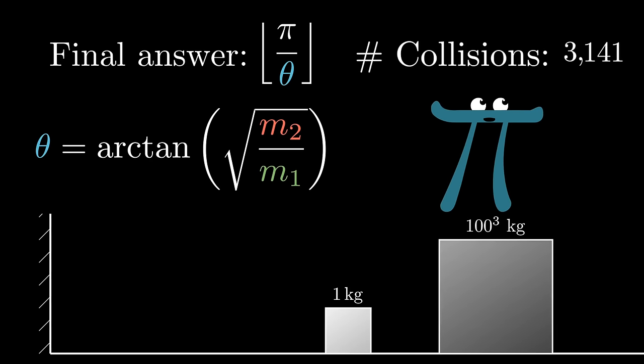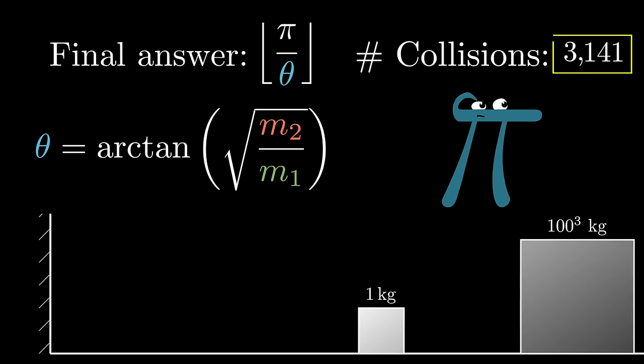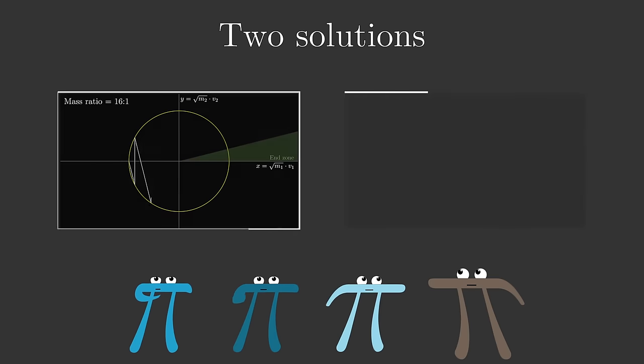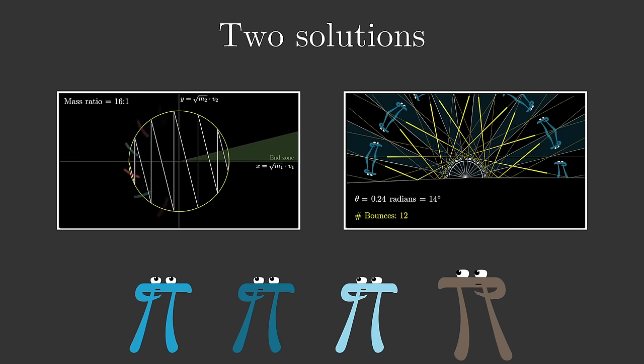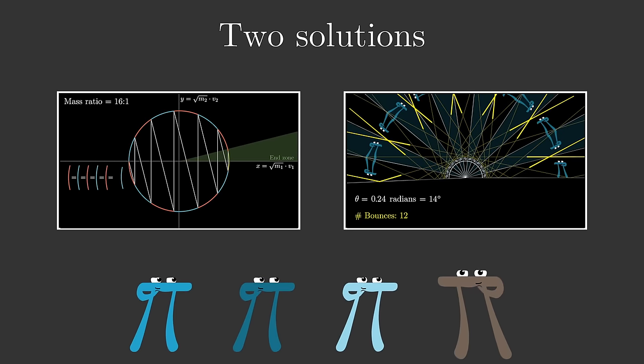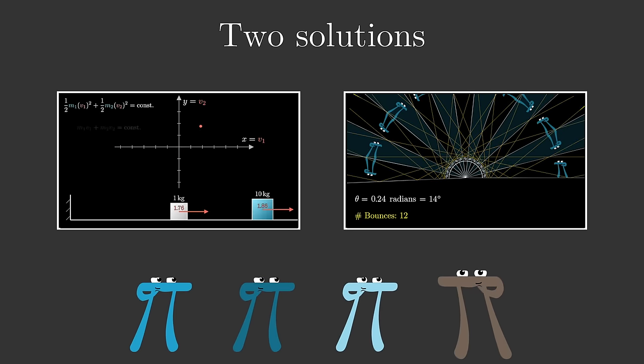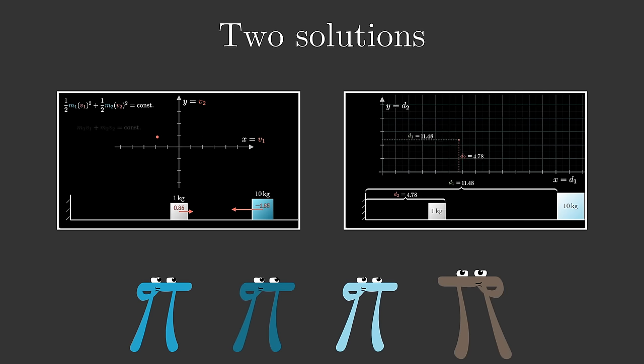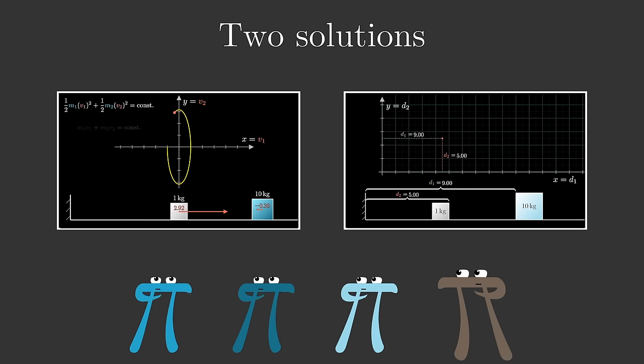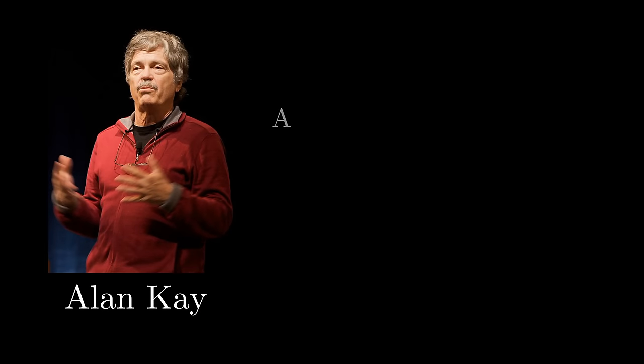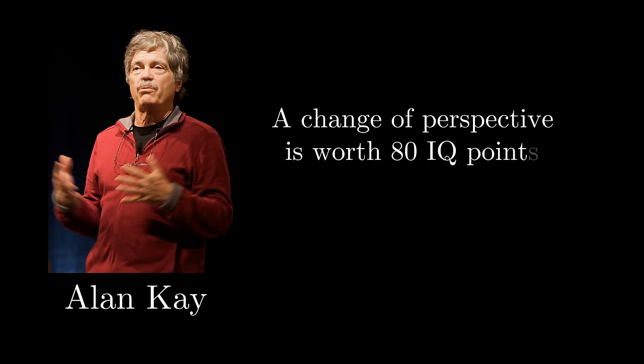And finally, as we reflect now on how absurd the initial appearance of pi seemed, and on the two solutions we've now seen, and on how unexpectedly helpful it can be to represent the state of your system with points in some space, I leave you with this quote from the computer scientist Alan Kay: A change in perspective is worth 80 IQ points.